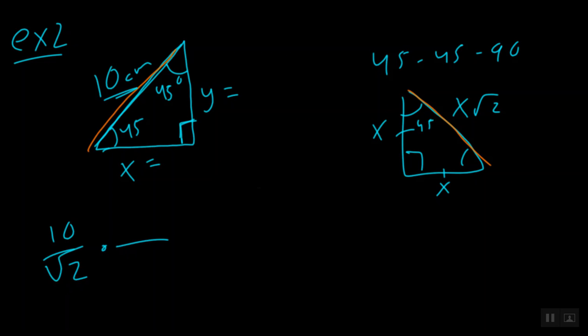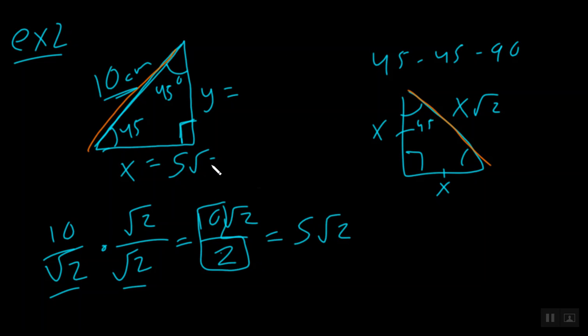So, I multiply both the bottom and the top by the square root of 2. Now, what do we know? We know the square root of 2 times the square root of 2 is simply 2, and on top, we'll have 10 square roots of 2. And, the last thing you ask yourself is, can 10 be divided by 2? It can, so that becomes 5 square roots of 2. 5 square roots of 2. And, recall, since x and x are the same, y must also be 5 square roots of 2.